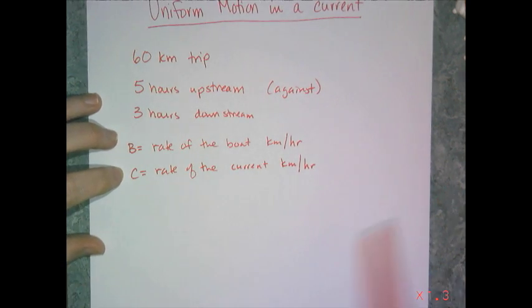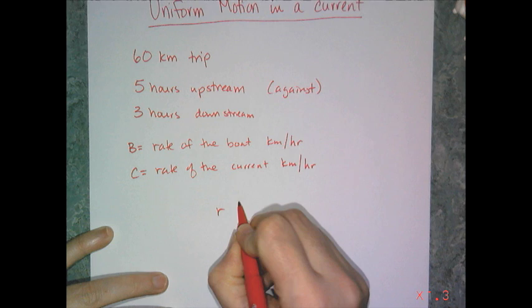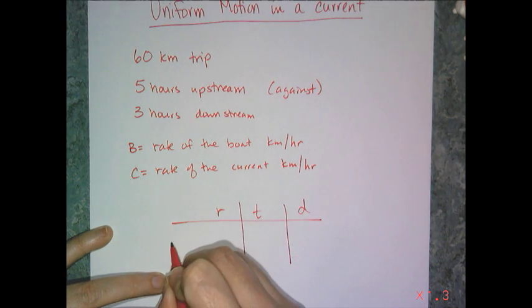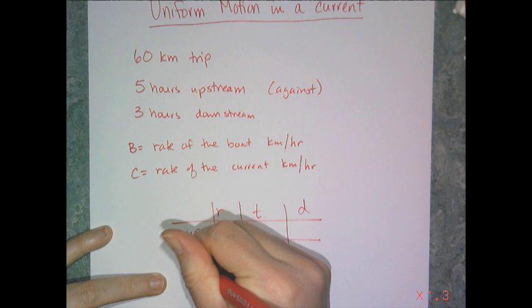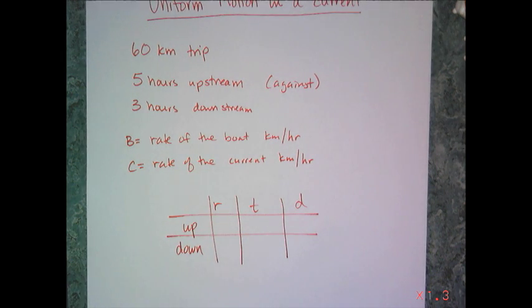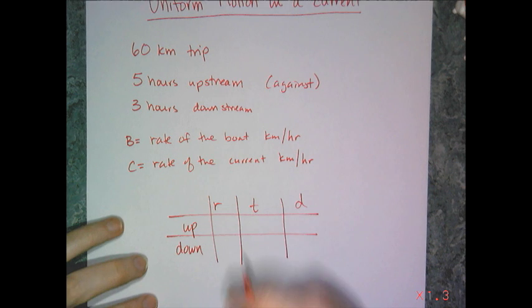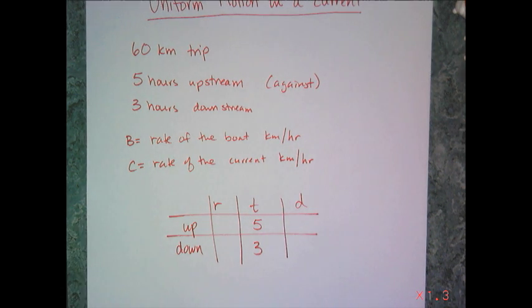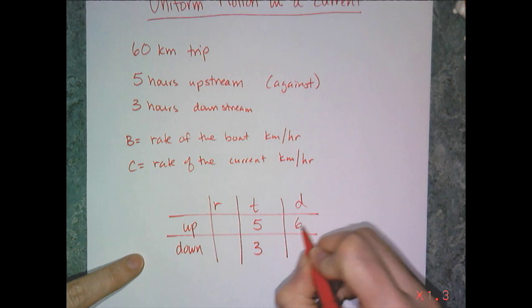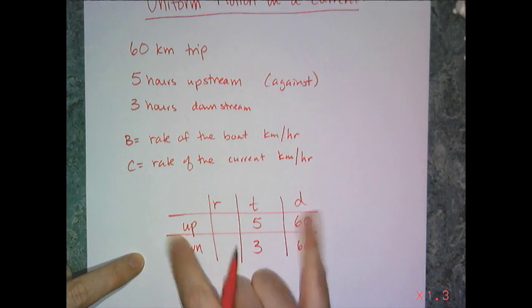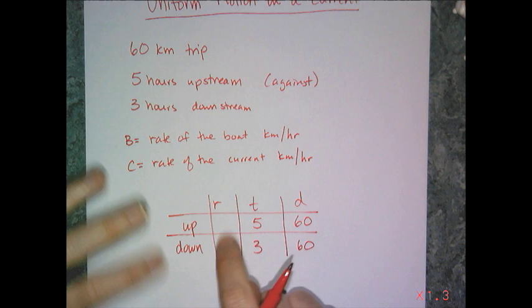So, I'm going to set up the rate times distance table, R, T, and D. And my trips, in this case, are going to be upstream and downstream. Now, I don't know the rates, but I do know the times. So, upstream is five hours, and downstream is three hours. And I also know the distances. So, this is 60, and that's 60, because you're going to and then from, same distance. So, now the question is, what's up with the rates?